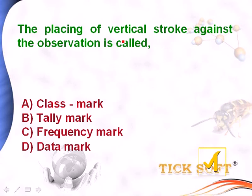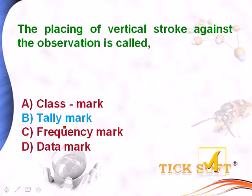The placing of a vertical stroke against an observation is called: option a, class mark; option b, tally mark; option c, frequency mark; option d, data mark. The placing of a vertical stroke against the observation is called a tally mark. So option b, tally mark, is the right answer.